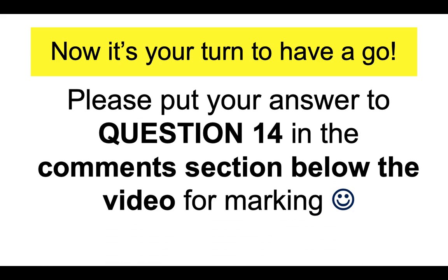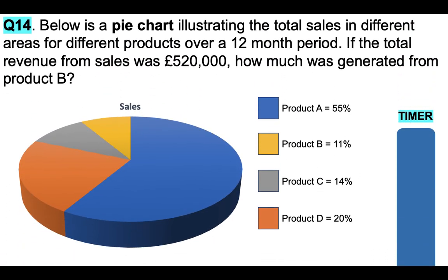Now it's your turn. Please put your answer to question 14 in the comments section below for marking. Below is a pie chart illustrating total sales in different areas for different products over a 12-month period. If the total revenue from sales was £520,000, how much was generated from product B? You have the time the timer takes to go down to put your answer in the comments section below.